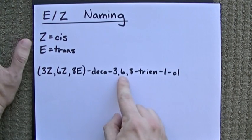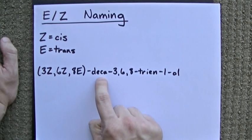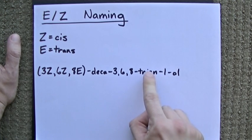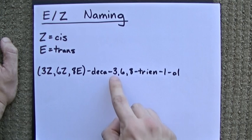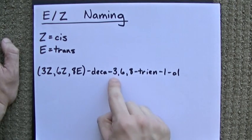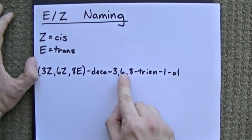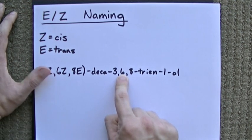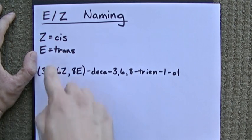(3Z,6Z,8E)-deca-3,6,8-trien-1-ol. What does this tell us? A 10-carbon chain with an OH group on carbon 1. We have three double bonds starting at carbons 3, 6, and 8. The double bond at carbon 3 is Z, which means cis. The double bond at carbon 6 is Z, which means cis. And the double bond starting at carbon 8 is E, which means trans.